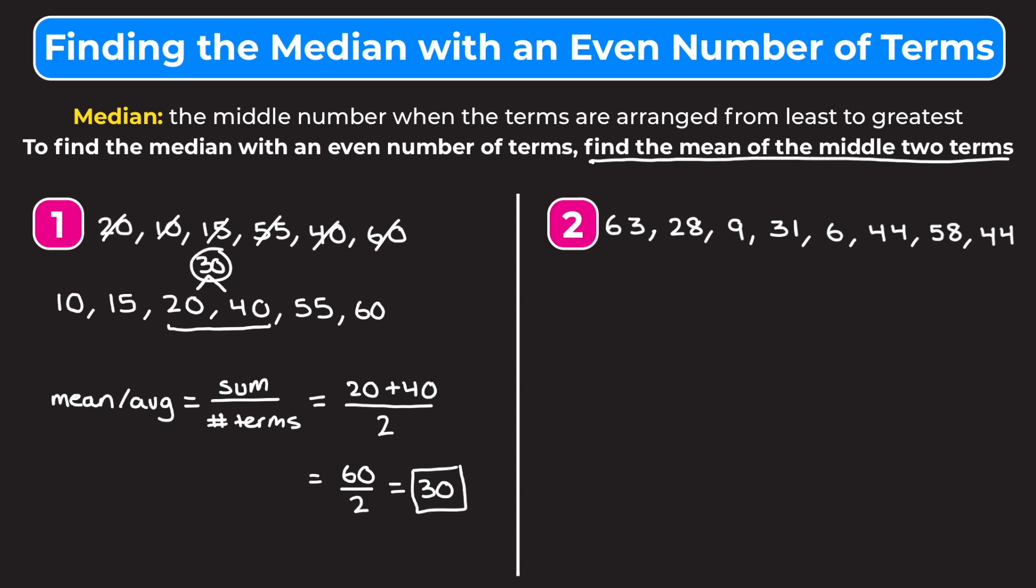Let's start by lining up our numbers from least to greatest: 63, 28, 9, 31, 6, 44, 58, 44. We start with 6, then we have 9, next we have 28, then 31, 44 shows up twice, 58, and 63. Again, we have an even number of terms—we have 8 terms.